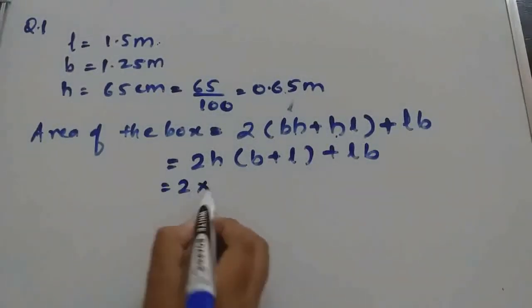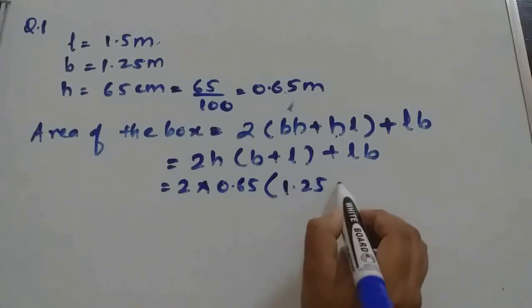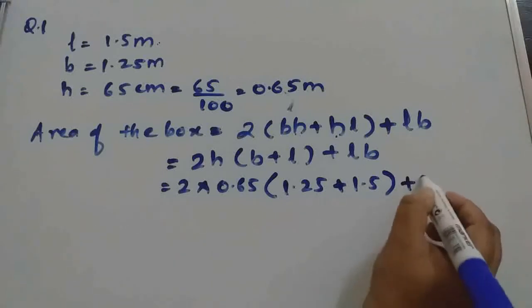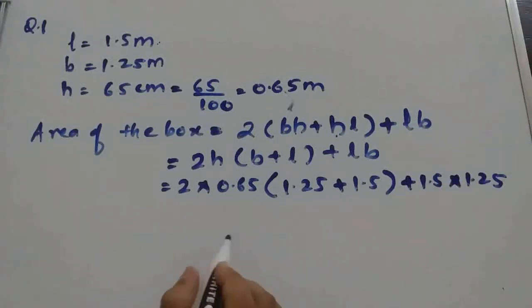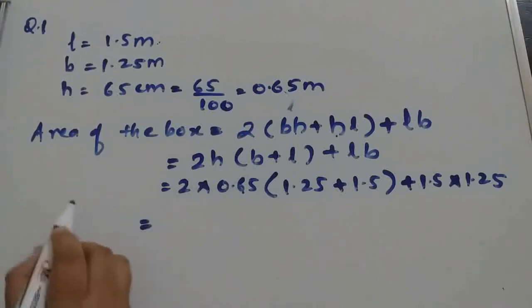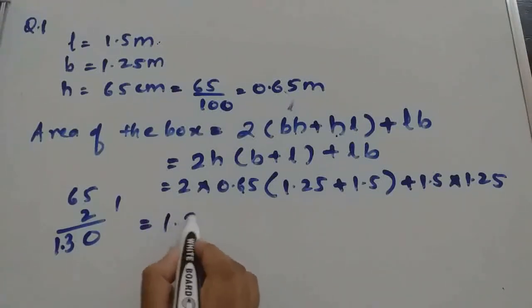Now H is 0.65, B is 1.25, L is 1.5. To multiply decimals we can avoid the decimal number first. We will get 130. Now after 2 digits decimal is there, so put after 2 digits. Ultimately you will get 1.3.